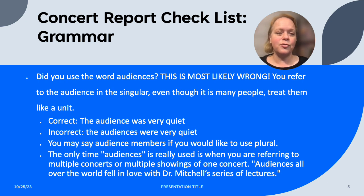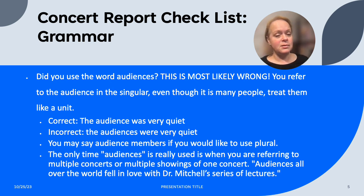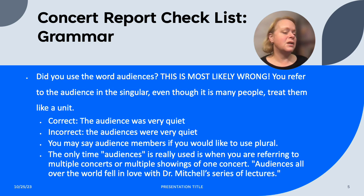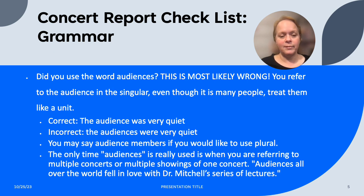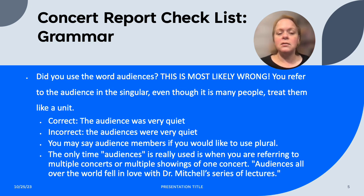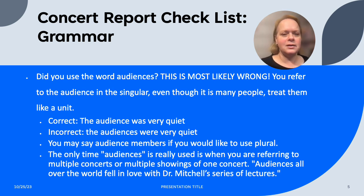Concert Report Checklist — look at your grammar. Did you use the word 'audiences'? This is most likely wrong. You refer to the audience in the singular — even though it's many people, it's a single unit. Say 'the audience was very quiet,' not 'the audiences were very quiet.' You may say 'audience members' if you want a plural form. The word 'audiences' is only appropriate when referring to multiple concerts or multiple showings.